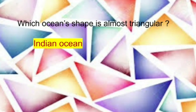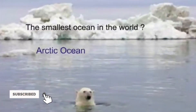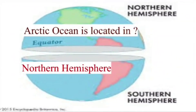Which ocean's shape is almost triangular? The Indian Ocean. The smallest ocean in the world is the Arctic Ocean, and it is located in the Northern Hemisphere.